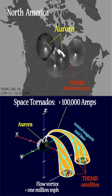Much of what is understood about space tornadoes was obtained through a NASA mission called Time History of Events and Macroscale Interactions during Substorms, which deployed several probes to measure the strength of the electrical currents, size, and velocity of the rotating plasma.